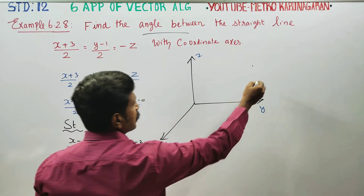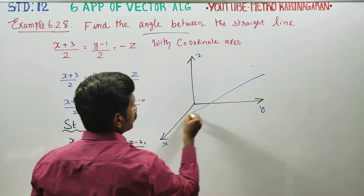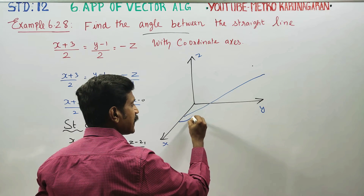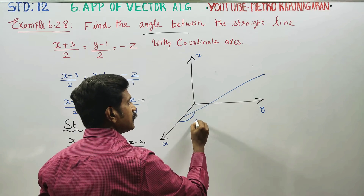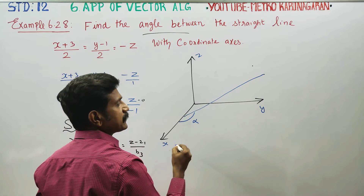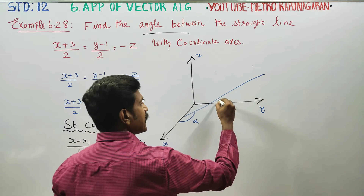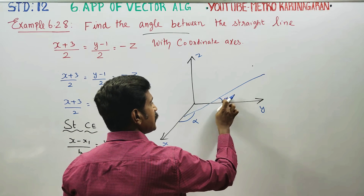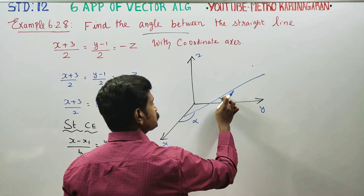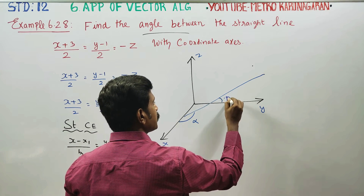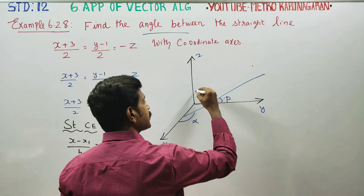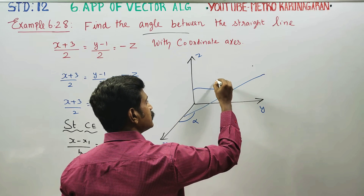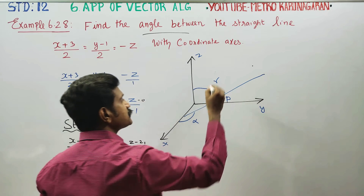Now, the straight line makes angles with each coordinate axis. The angle with the x axis is alpha, the angle with the y axis is beta, and the angle with the z axis is gamma.